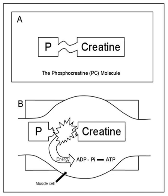Since energy is released when ATP is broken down, energy is required to rebuild or resynthesize it. The building blocks of ATP synthesis are the by-products of its breakdown: adenosine diphosphate and inorganic phosphate.